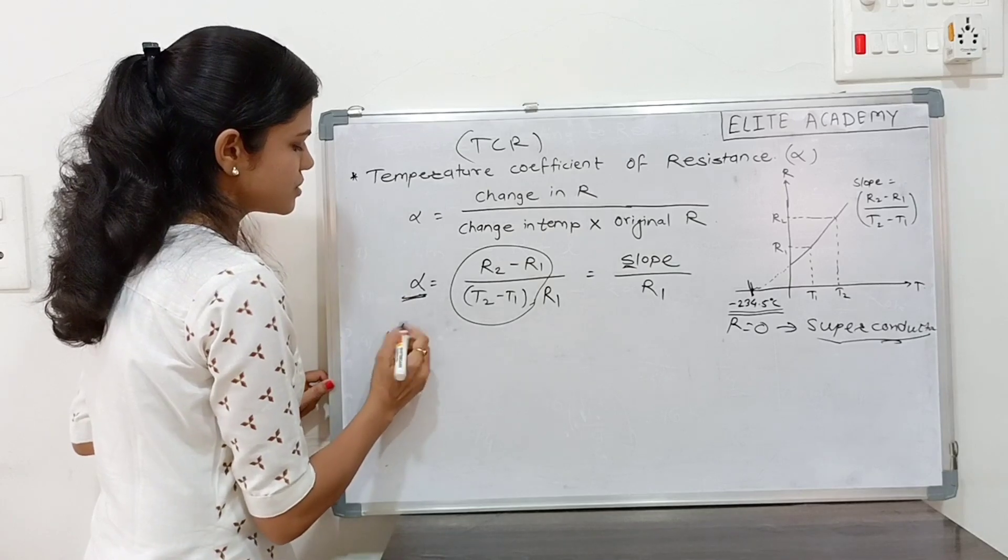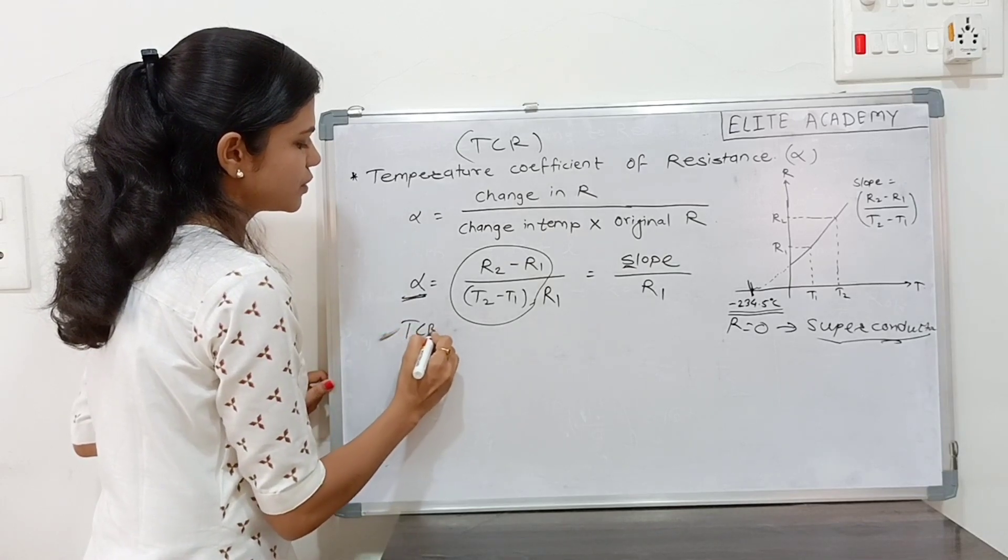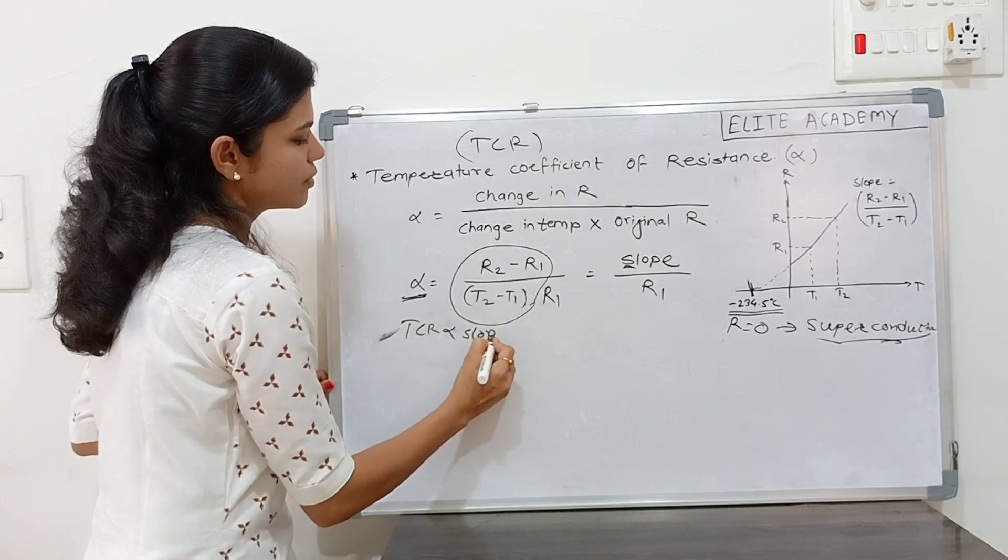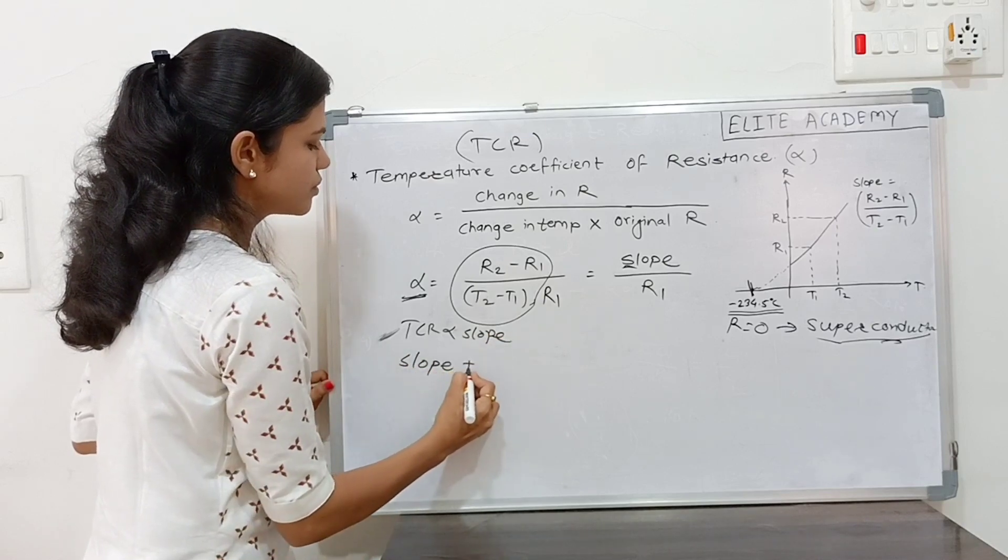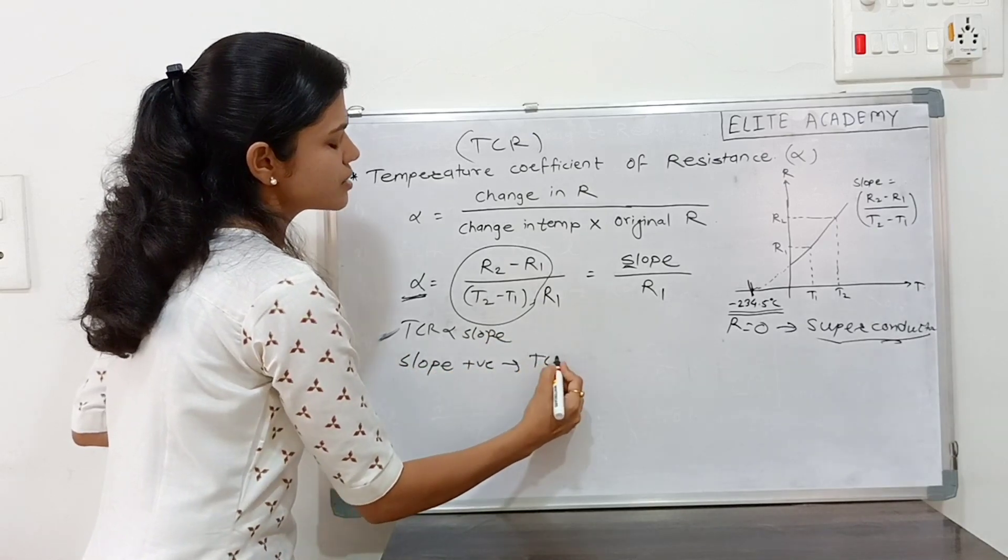So this TCR is directly proportional to slope. If slope is positive, TCR is also positive.